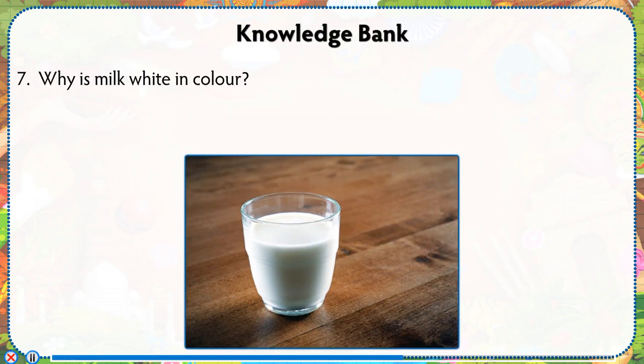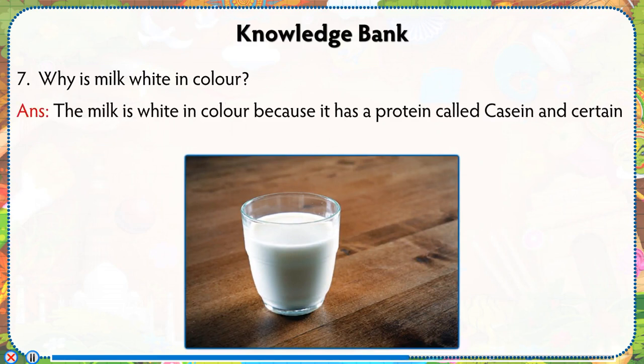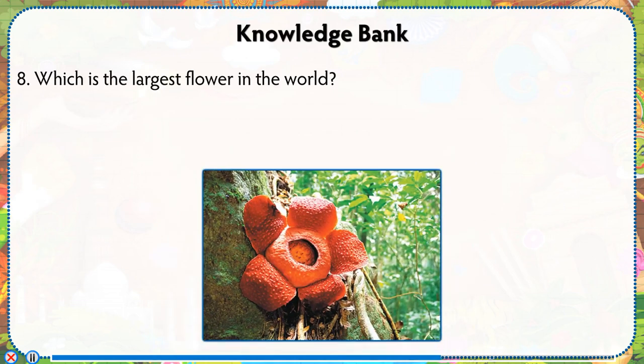Why is milk white in color? Milk is white in color because it has a protein called casein and certain other fats which are white in color.